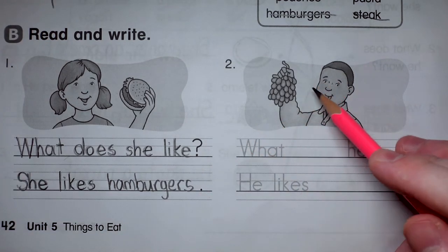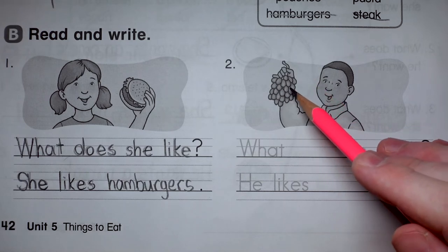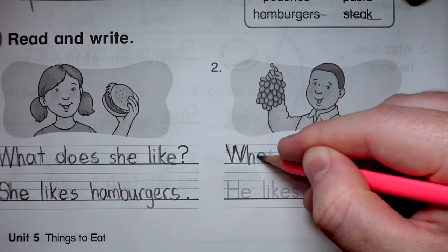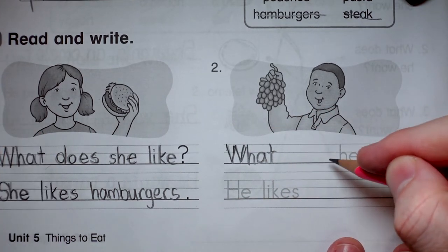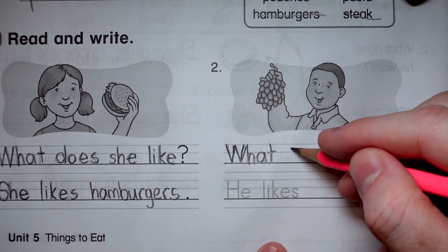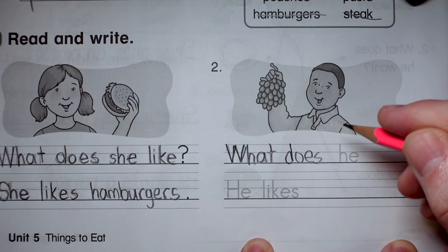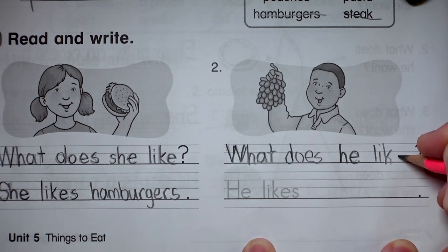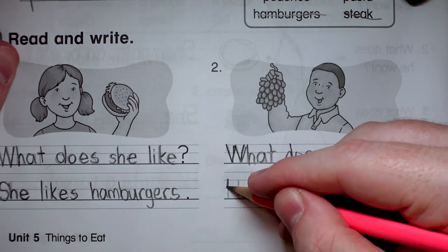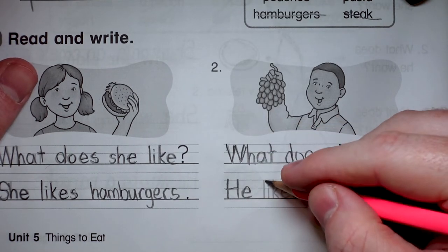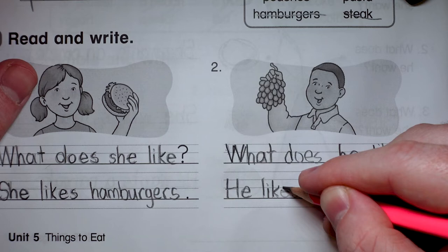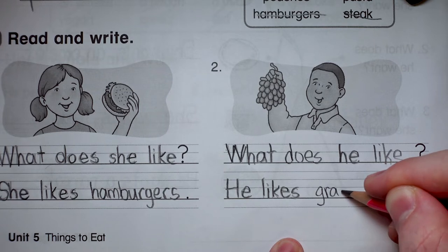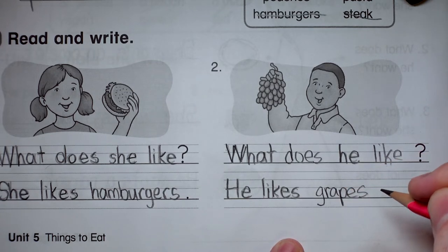Okay, the next one is this boy. Wow, he has a whole bunch of grapes. What? W-H-A-T. And in this space, we have to put the helping word which is does. What does. And it's a boy, so he. And we want to find out about a like. Like. What does he like? Over here. He. And then we have to say likes. Add the S. And these are grapes. Grapes, grapes. He likes grapes. Done.